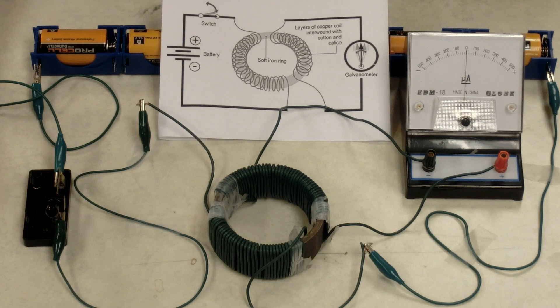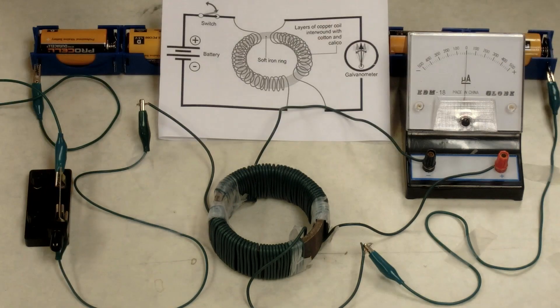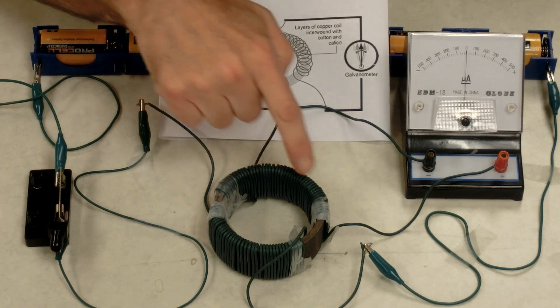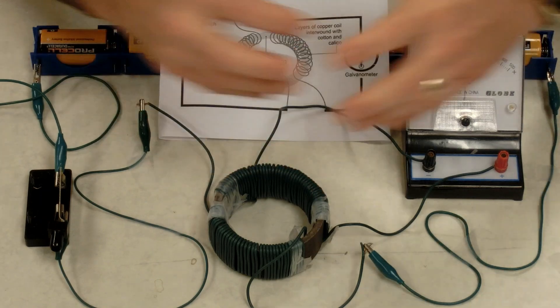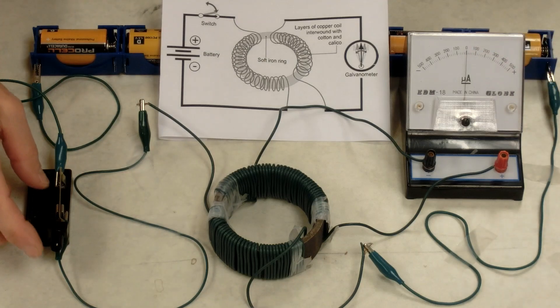Faraday figured out this meant that the magnetic field has to be in motion, moving, to generate the current in the other wire. When we first close the switch, the magnetic field is building up, it's expanding outward, and that creates the current in the wire. But once it's built up, it's not in motion anymore, that current stops.